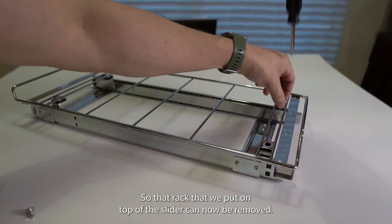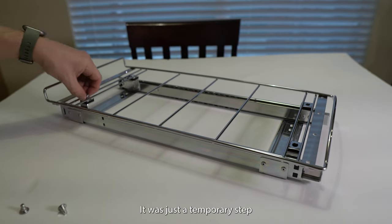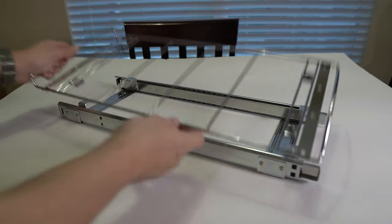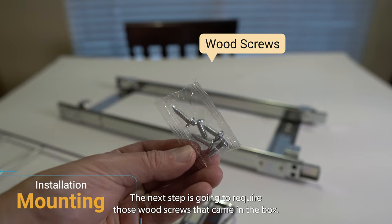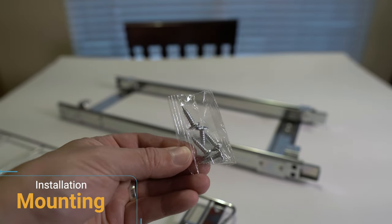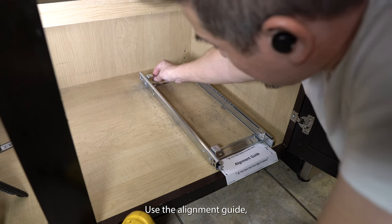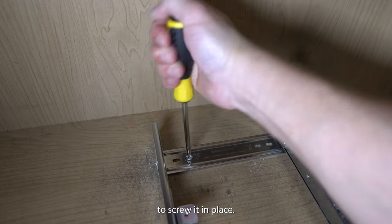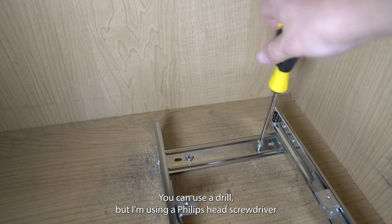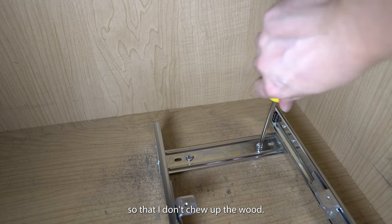So that rack that we put on top of the slider can now be removed. That was just a temporary step. The next step is going to require those wood screws that came in the box. Replace the slider back into the cabinet, use the alignment guide, align it with the holes, and then use your Phillips head screwdriver to screw it in place. You can use a drill but I'm using a Phillips head screwdriver so that I don't chew up the wood.